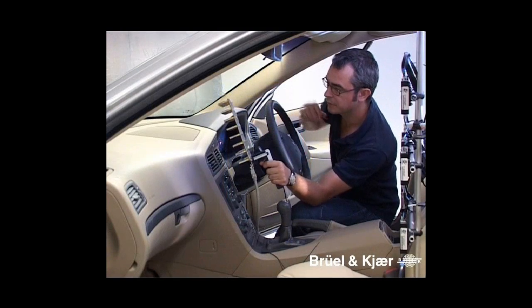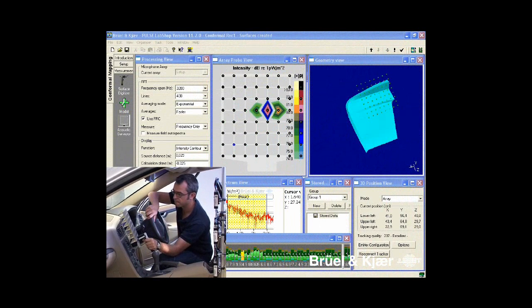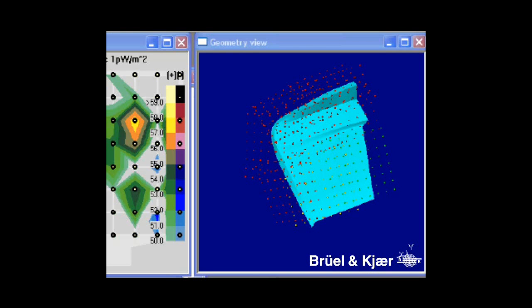For greater resolution, a planar, handheld array could be used to produce an acoustical map conformal to the surface of the structure.